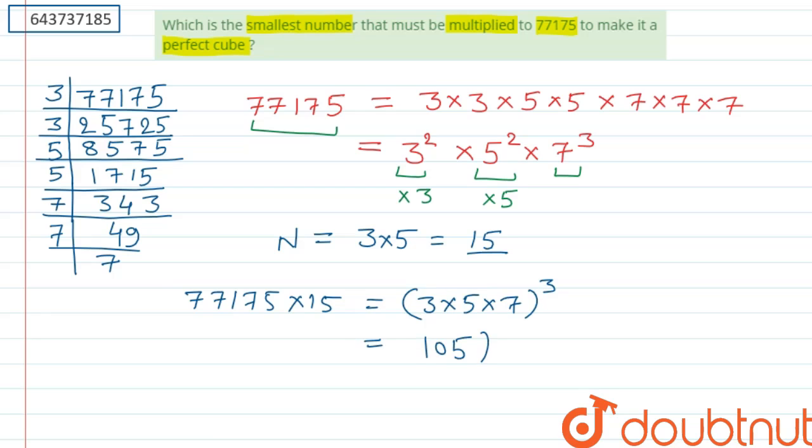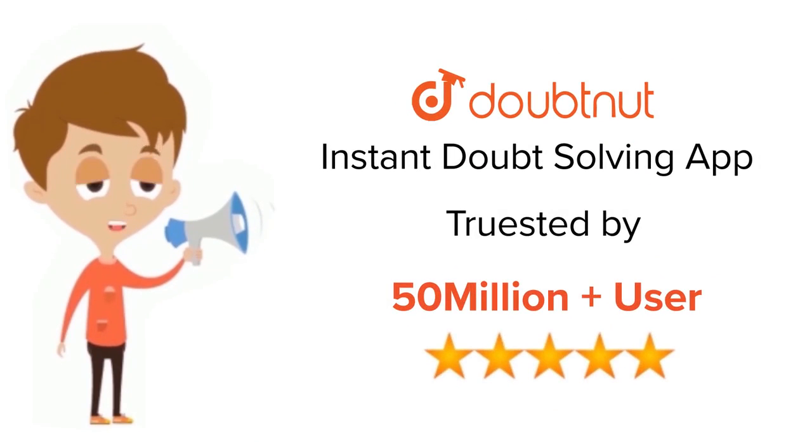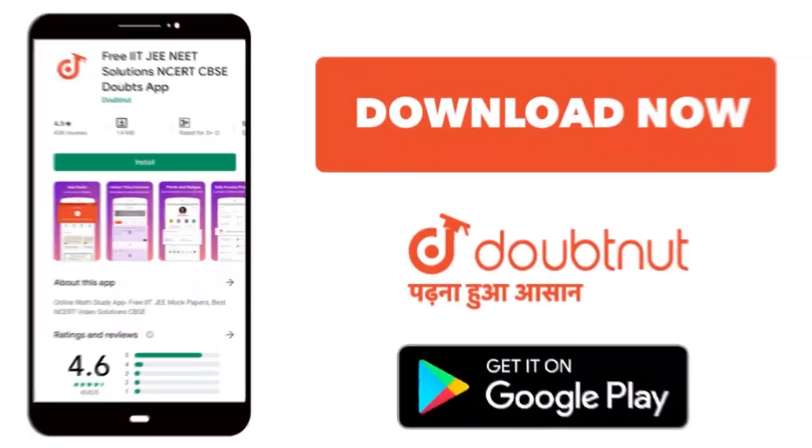it will become the cube of 3×5×7, and that equals 105³. Thank you. For Class 6 to 12, JEE and NEET level, trusted by more than 5 crore students, download Doubtnut app today.